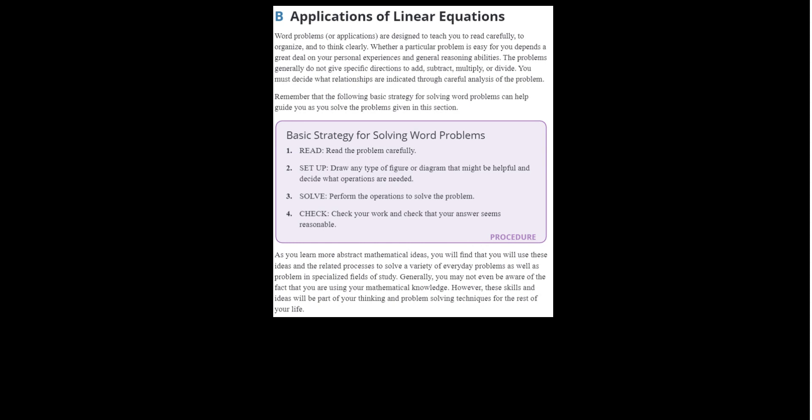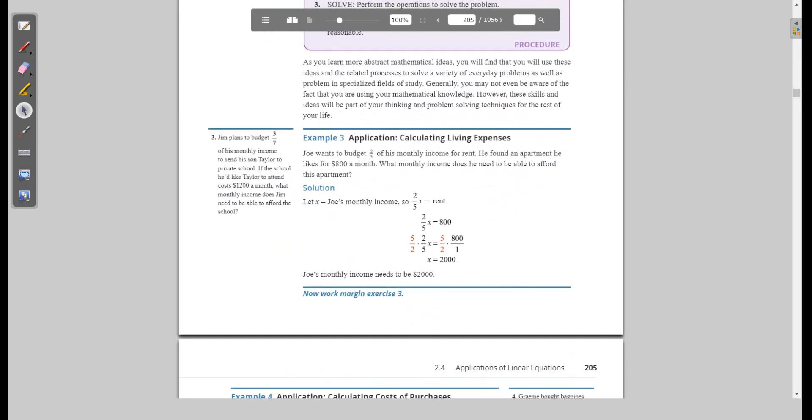The applications of linear equations — word problems. Joe wants to budget two-fifths of his monthly income for rent. He found an apartment he likes for $800 a month. What monthly income does he need to be able to afford his apartment?